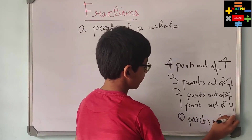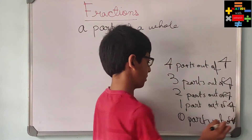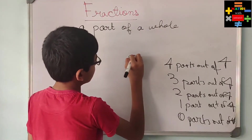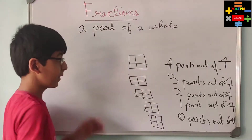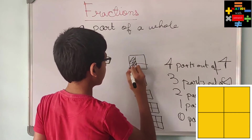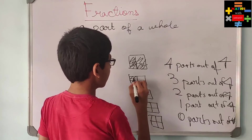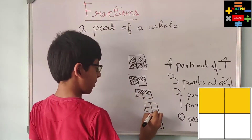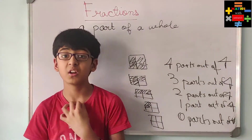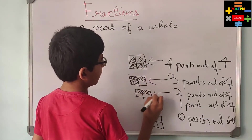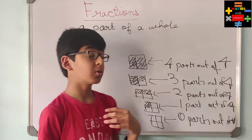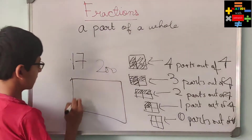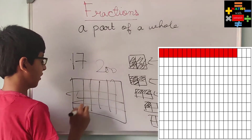So like this we have written and expressed parts of a whole. But we can always write words like this, and we can also make diagrams to represent. So for four parts out of four I will shade all four. Three parts out of four means I shade three parts. Two parts out of four means I shade two parts. One part means I shade one part and zero parts means I shade no parts. But always when making diagrams — suppose if you want to represent 70 parts out of 200 — will you make a big table with 200 blocks and color 70 of them? No.